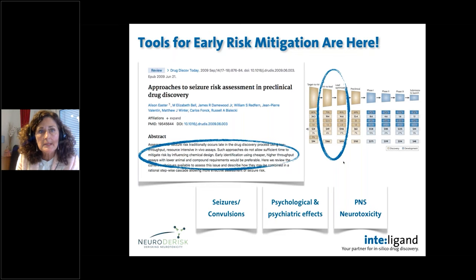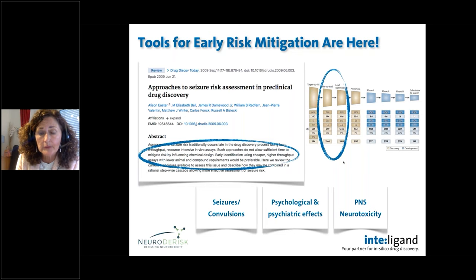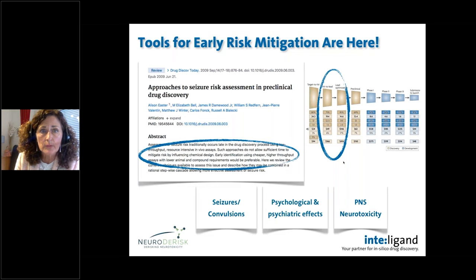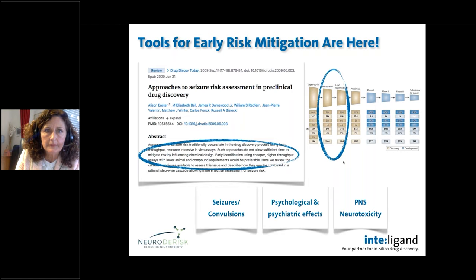Tools for early risk mitigation are here, covering seizures, convulsions, psychological and psychiatric effects, and peripheral nervous system neurotoxicity. We can use these tools already at very early stages — hit finding, hit expansion, and lead optimization stages of drug discovery.